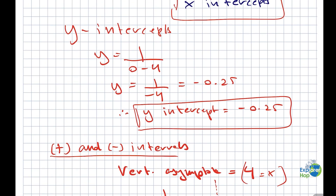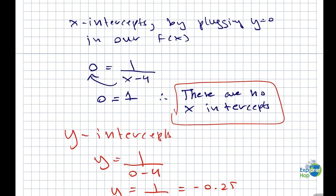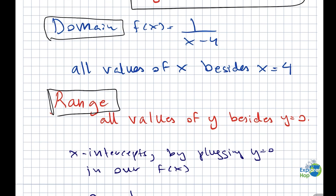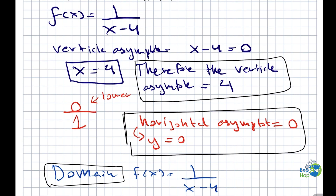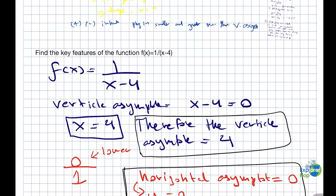Our y intercept is minus 0.25. There is no x intercept. The range is all values of y besides y equals to 0. The domain is all values of x besides x equals to 4. Our horizontal asymptote is y equals to 0, and our vertical asymptote is x equals to 4. Those are all the key features of our function. Thank you for joining me — I'll see you in the next lesson.